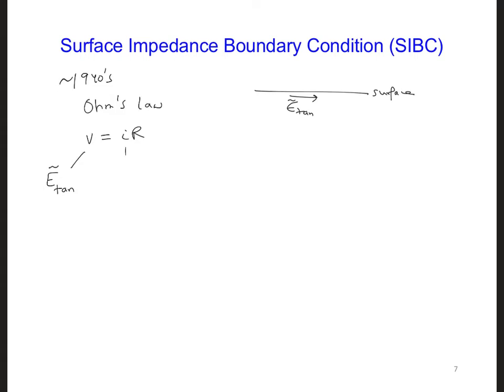And the current corresponds to the magnetic field, tangential as well. And the resistance R is going to be written as eta, the characteristic impedance of the conducting material.